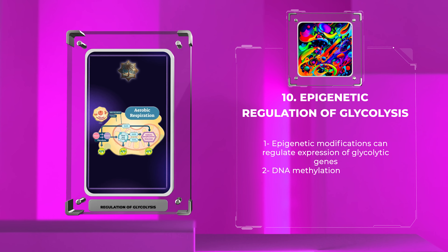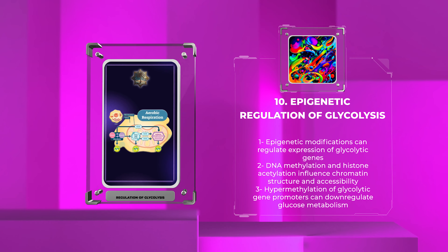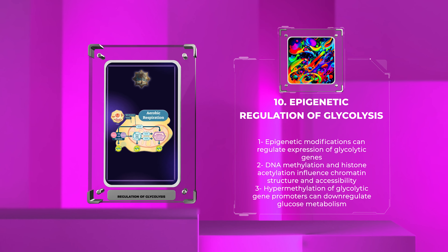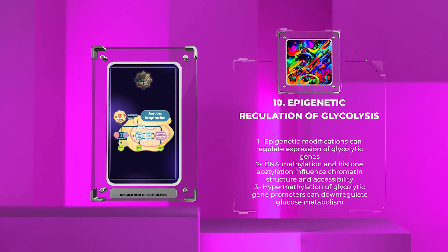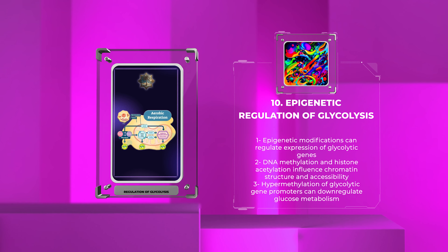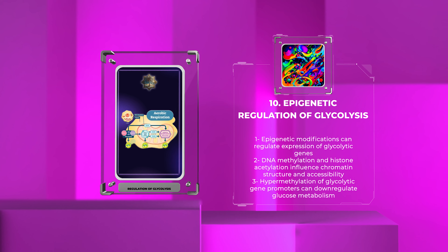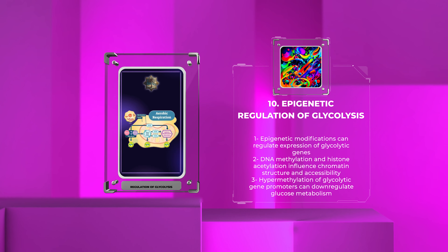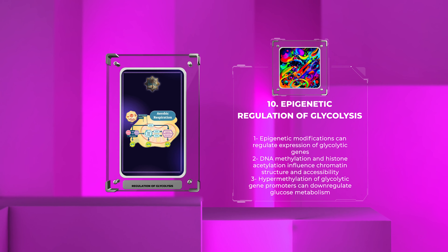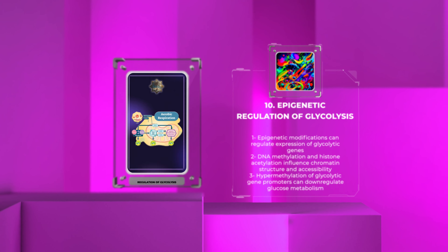Epigenetic modifications, such as DNA methylation and histone acetylation, can regulate the expression of glycolytic genes. These modifications influence chromatin structure and accessibility to transcription factors, ultimately affecting gene transcription. For instance, hypermethylation of the promoter region of certain glycolytic genes can lead to their downregulation, impairing glucose metabolism and contributing to metabolic disorders.